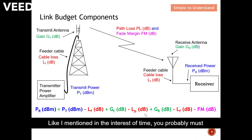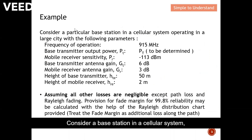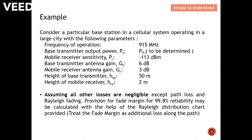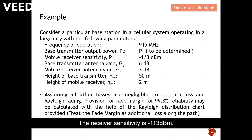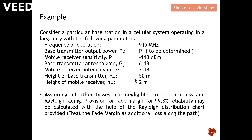So as I mentioned, in the interest of time, take it that this is the equation to calculate the link budget. Consider a base station in a cellular system operating in a large city with the following parameters: frequency of operation is 915 MHz, receiver sensitivity is minus 113 dBm, transmitter antenna gain 6 dB, receiver antenna gain 3 dB, height of base station 50 meters, height of receiver 2 meters.